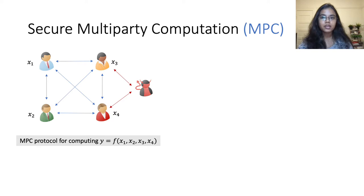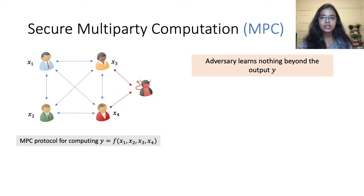Secure multiparty computation is an interactive protocol that allows a group of mutually distrusting parties to jointly compute a function on their private inputs. The security of MPC guarantees that an adversary who corrupts a subset of the parties does not learn anything beyond the output of the function.